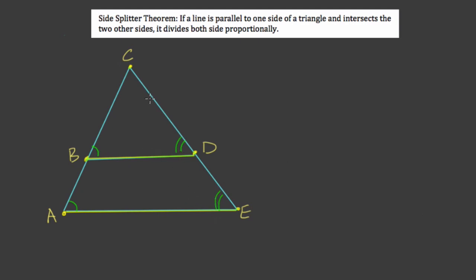And last, angle BCD is equal to ACE. In other words, this angle is equal to itself. That's the reflexive property.